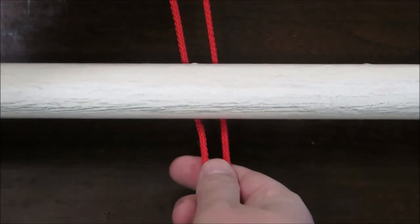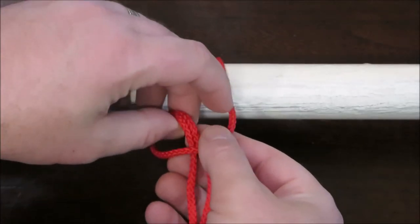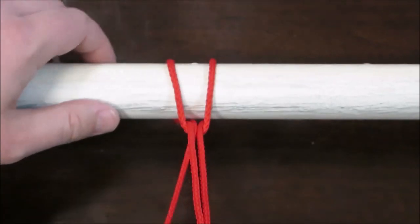First, create a loop, pass it under and over the bar, and then pull the other end through the loop and pull tightly.